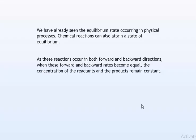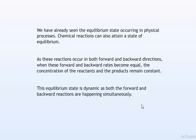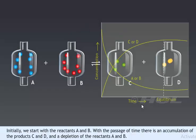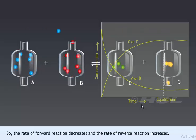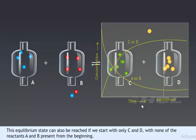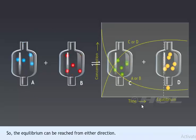Reversible reactions attain a state of equilibrium. As these reactions occur in both forward and backward directions, when forward and backward rates become equal, the concentrations of reactants and products remain constant. This equilibrium state is dynamic as both forward and backward reactions happen simultaneously. Consider a general reversible reaction: A and B react reversibly to give C and D. Initially we start with reactants A and B. With time, products C and D accumulate and reactants A and B are depleted, so the rate of forward reaction decreases and the rate of reverse reaction increases. Eventually a state of equilibrium is achieved when the two rates become equal. This equilibrium can also be reached starting with only C and D — equilibrium can be reached from either direction.